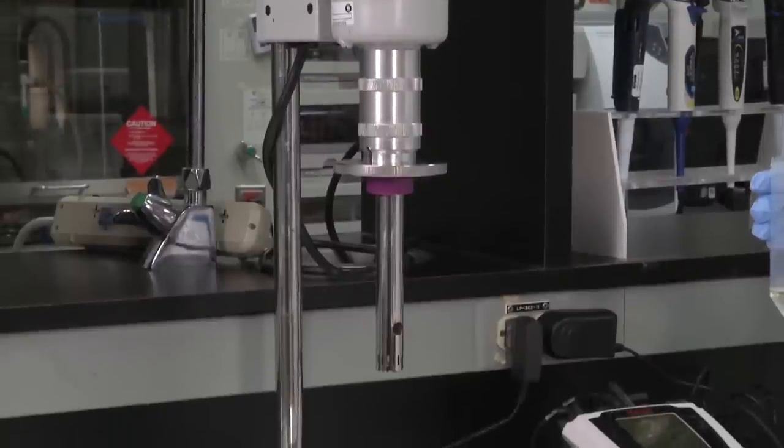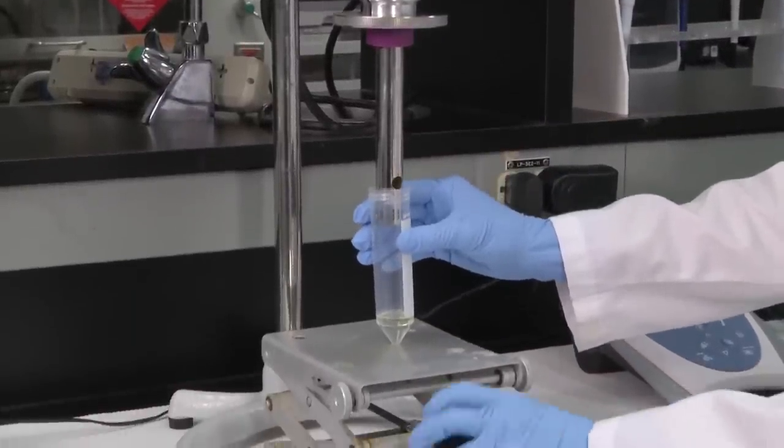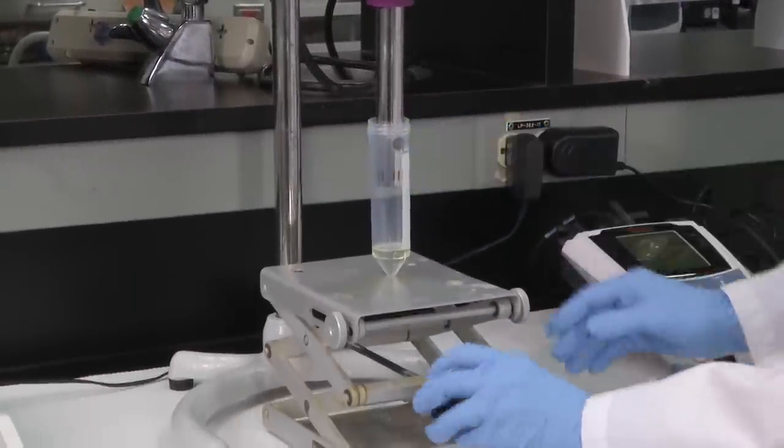Next, place the homogenizer probe into the tube so that the bottom of the probe blade is positioned at the oil-water interface.